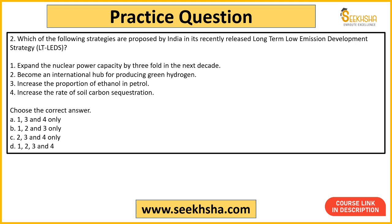Next question: Which of the following strategies are proposed by India in its recently released Long Term Low Emission Development Strategy (LT-LEDS)? Statement 1: expand nuclear power capacity three times in the next 10 years. Statement 2: become an international hub for green hydrogen production. Statement 3: increase ethanol proportion in petrol. Statement 4: increase soil carbon sequestration. The correct answer is option B — statements 1, 2, and 3.